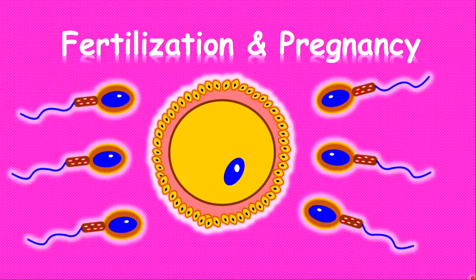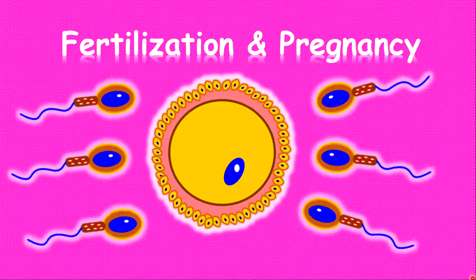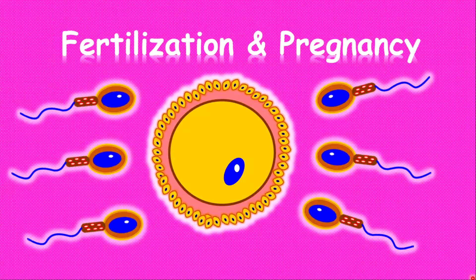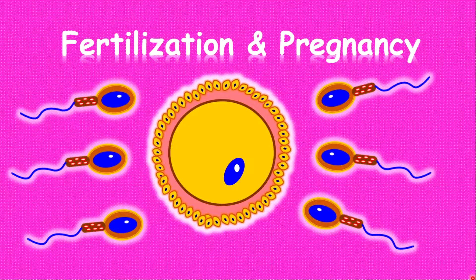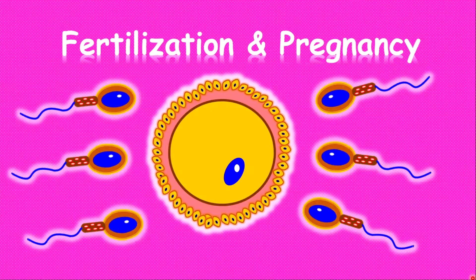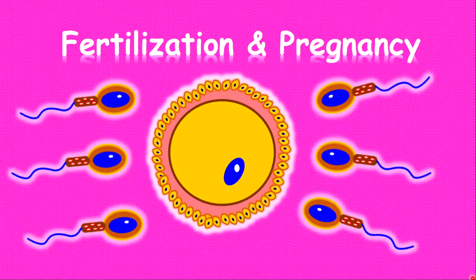Welcome back to another learning series with Mr. Knight. Today we're looking at fertilization and pregnancy. Fertilization is a process where gametes or sex cells meet to form a zygote. Pregnancy, otherwise called the gestation period, is the point from conception or fertilization to the point of giving birth. In human beings, this usually takes up to 40 weeks.